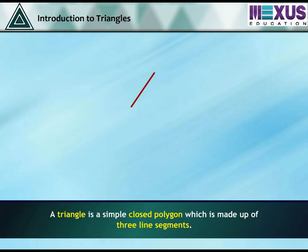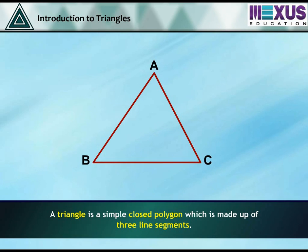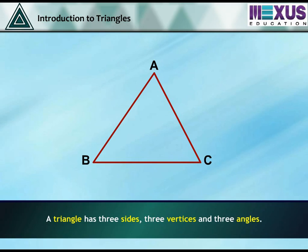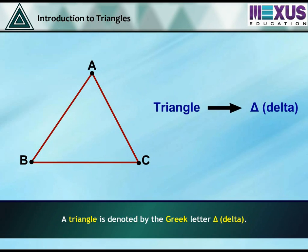A triangle is a simple closed polygon which is made up of three line segments. A triangle has three sides, three vertices and three angles. A triangle is denoted by the Greek letter delta.